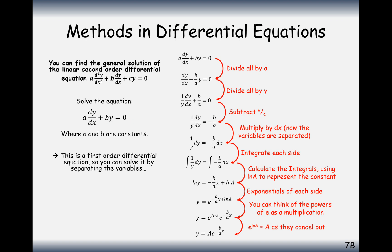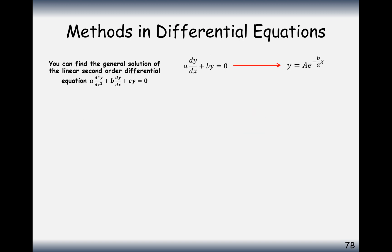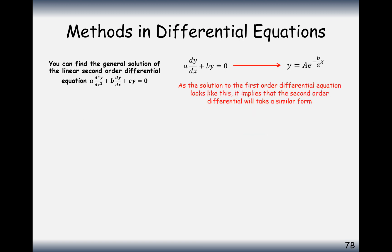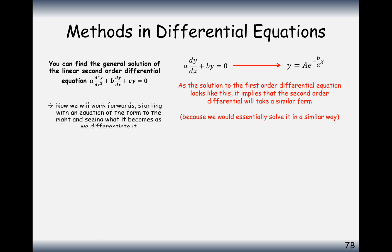Then we take the inverse of the ln to get y. We raise e to the whole right hand side and split it up by the addition of indices, and since e to the ln of anything is just that thing, we get y equals A e to the minus b over a times x. That's what happens with first order differential equations when it equals zero, and we assume the same will work for second order.